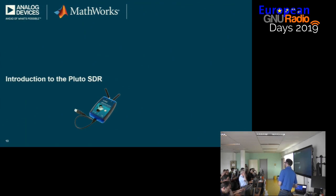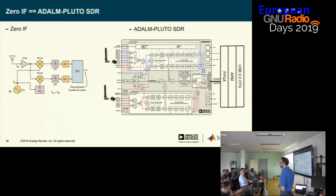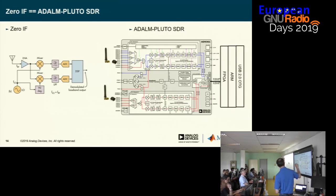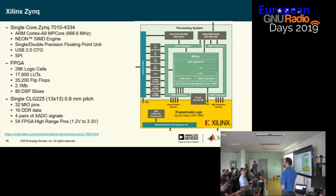Pluto uses an AD9363 inside it, which is the zero-IF architecture. The right side shows the simplified block diagram of the 9363 with receive channels on the top right and transmit paths on the bottom. On the far right is a collection of other things — the stuff that makes it work — because most of us are just interested in the transceiver, but you need these other pieces to move data back and forth, to interface with and configure the device.